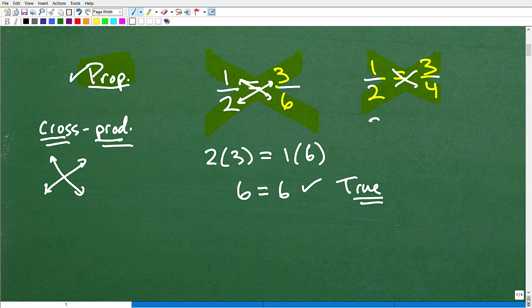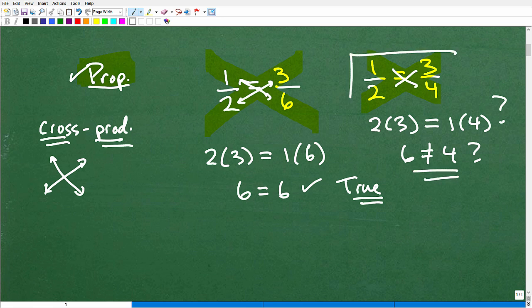So 2 times 3, is that equal to 1 times 4? All right, so we have to answer that question. So 2 times 3 is 6. Is 6 equal to 4? No, 6 is not equal to 4. So therefore, this is not a proportion.